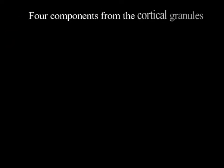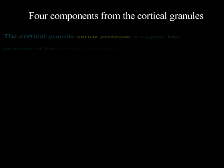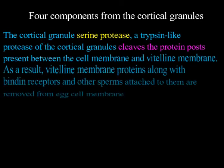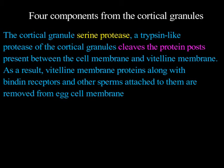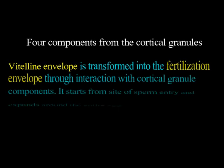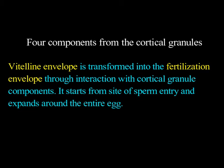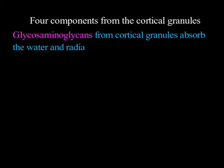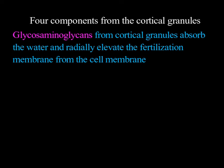Four components from the cortical granules perform distinct functions. First, the cortical granule serine protease, a trypsin-like protease, cleaves the proteins present between the cell membrane and the vitelline membrane. As a result, vitelline membrane proteins along with binding receptors and the sperms attached to them are removed from the egg cell membrane. The vitelline envelope is then transformed into a fertilization envelope through interaction with cortical granule components, starting from the site of sperm entry and expanding around the entire egg. The glycosaminoglycans from cortical granules absorb water and radially elevate the fertilization membrane from the cell membrane.